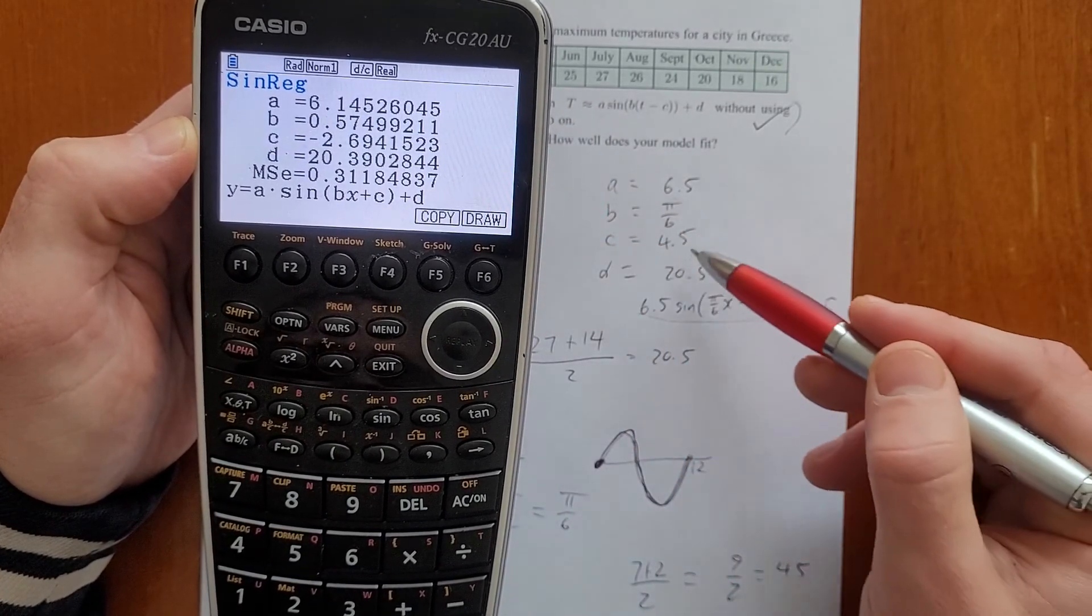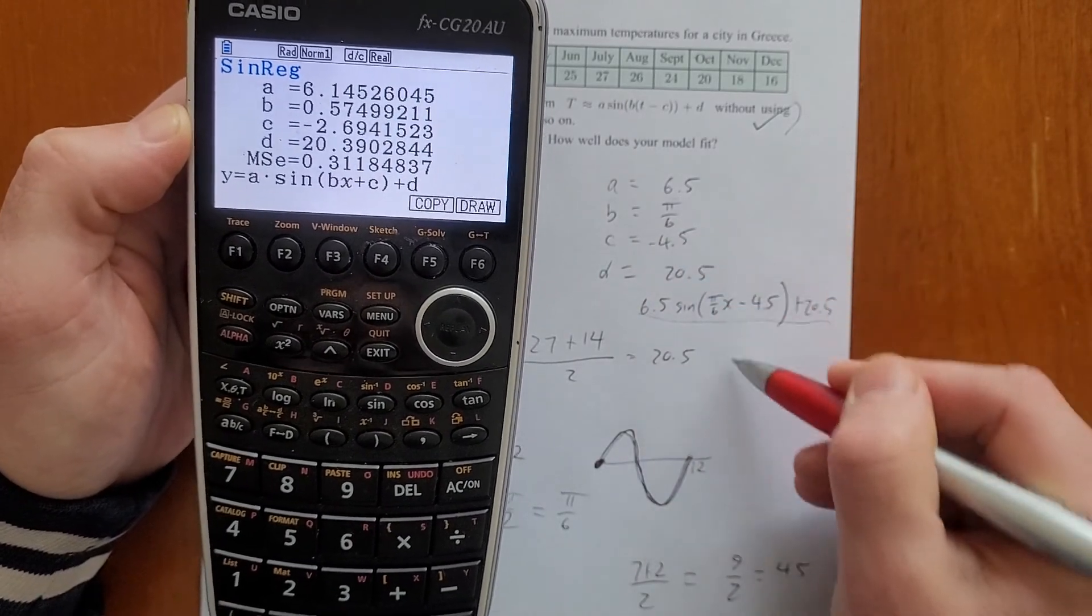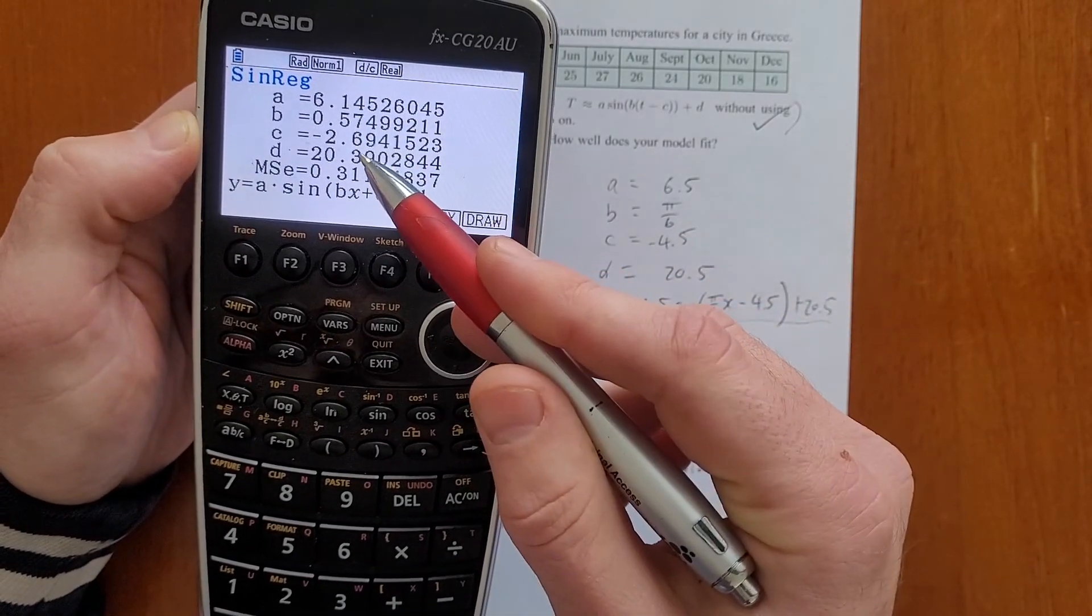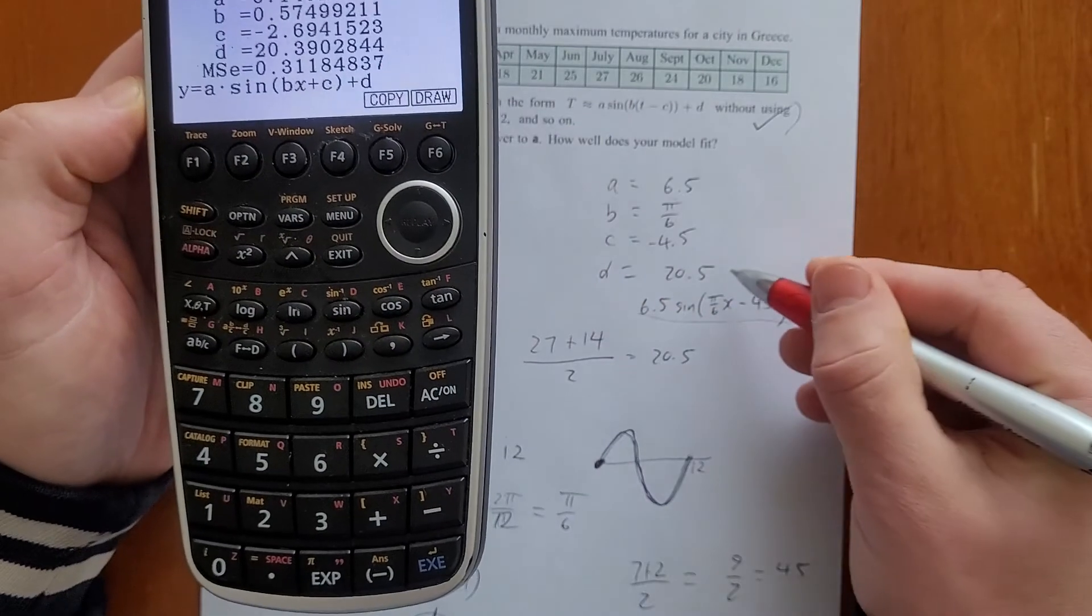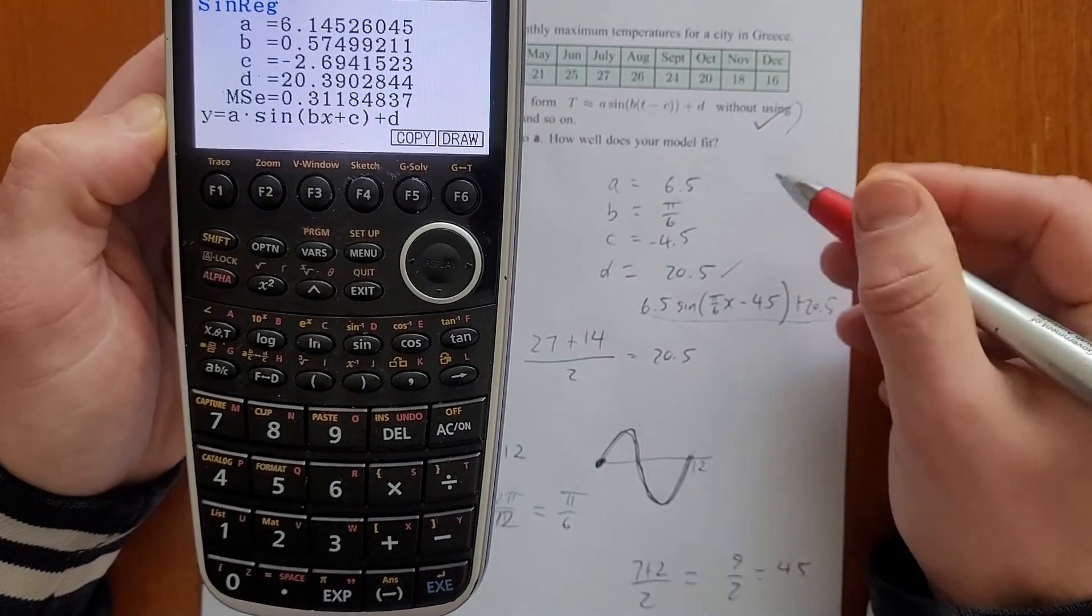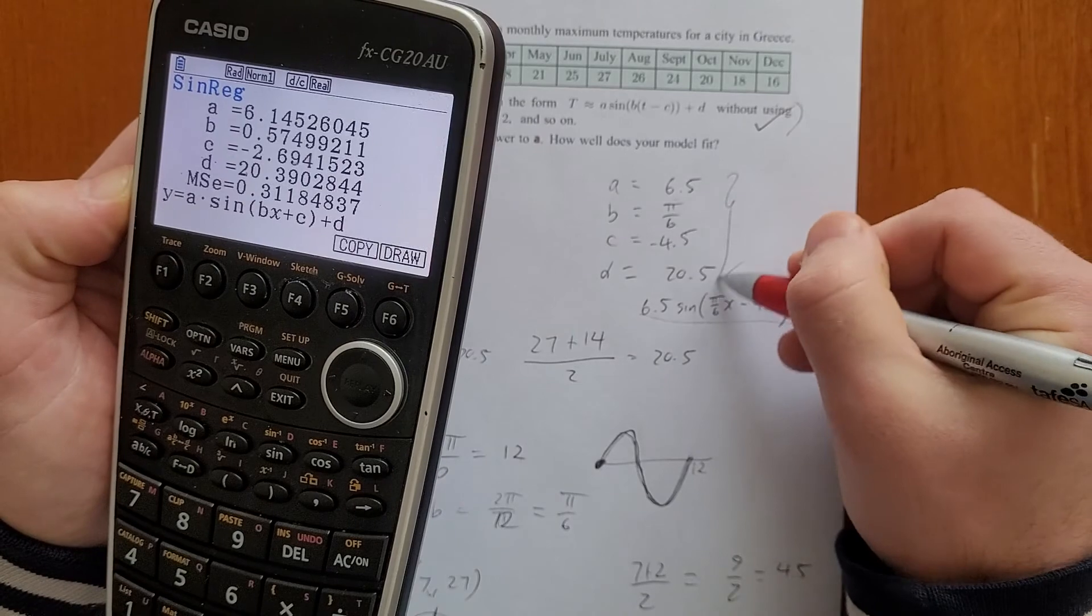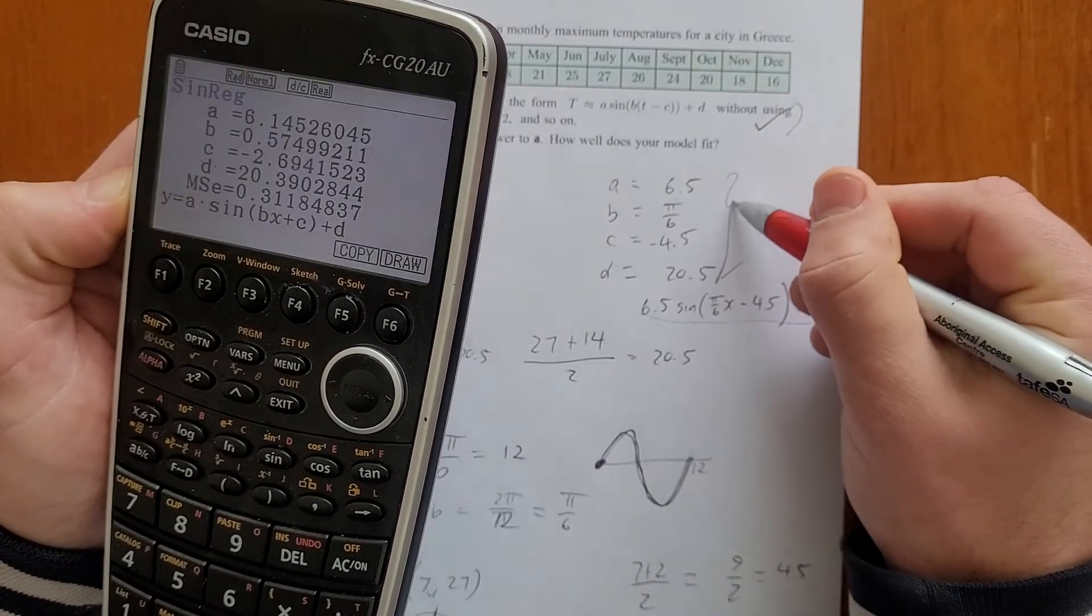I think you'll find that's reasonably close to π on 6. C, our value of C is quite different. Now, that should be negative, by the way, because let's take 4.5. So quite different. And our value of D is quite close. So it's a reasonably similar model, just based off of our predictions here.